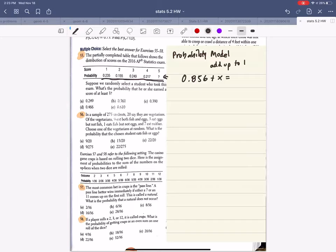So we can call that x, and we know those all add up to 1. So if we subtract this, this is the idea of the complement. X is 0.144.